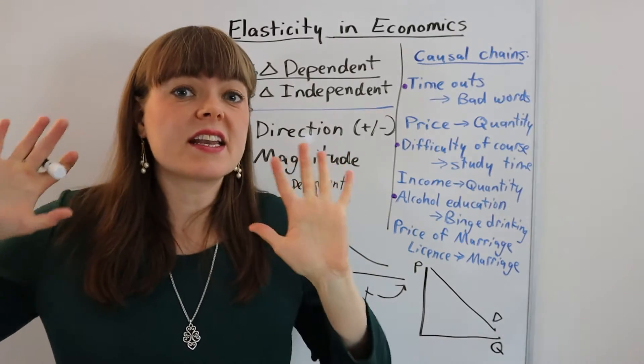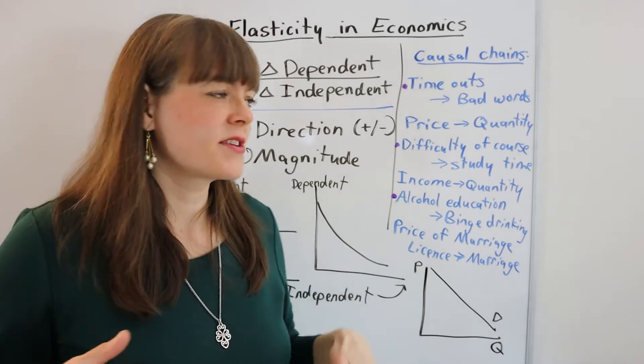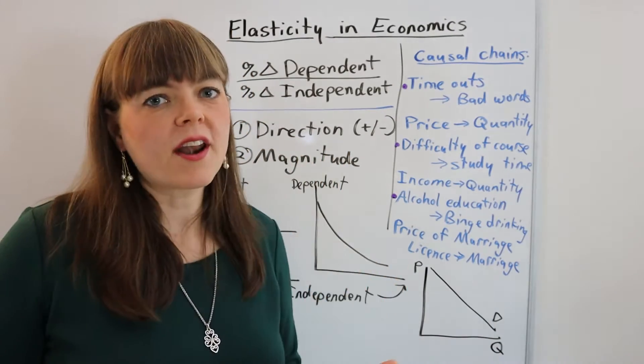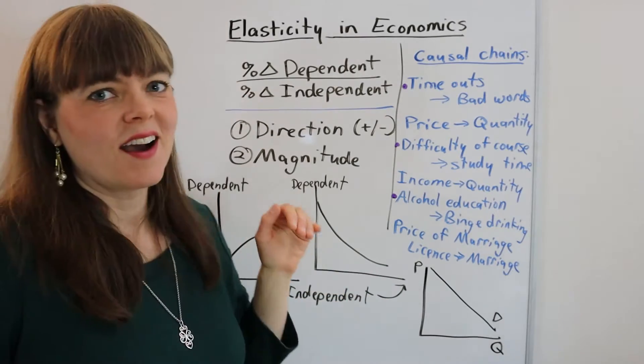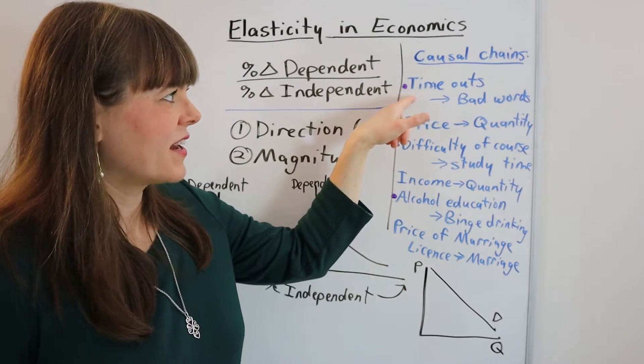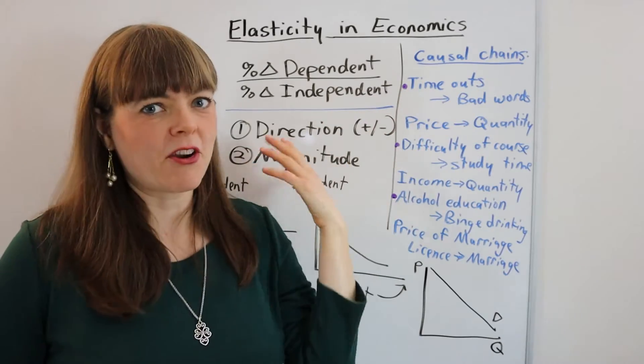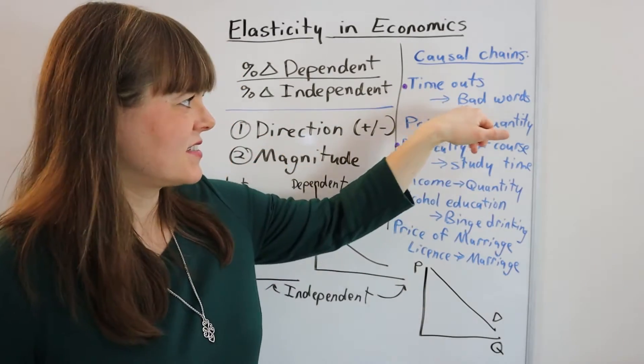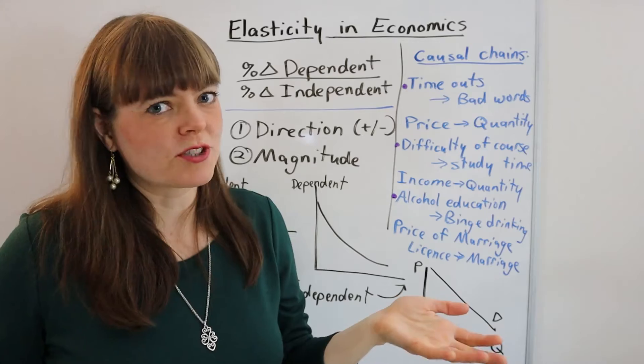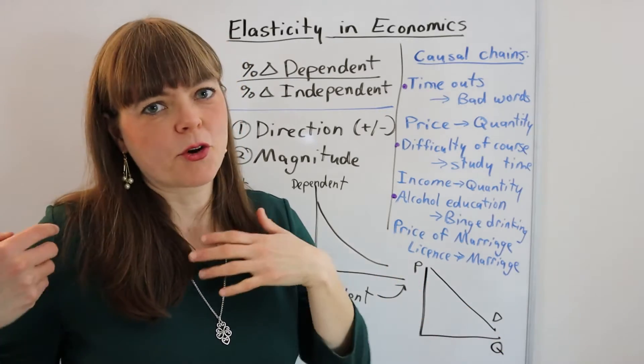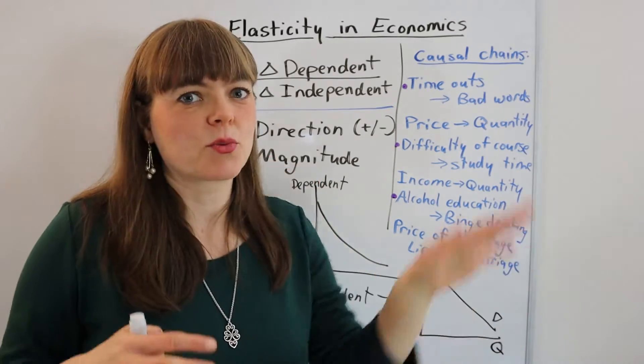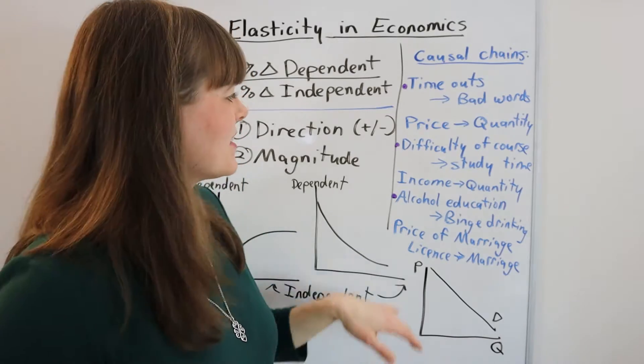I think it is easiest to learn this concept when you start with non-economics-y versions of these variables. So here I've got independent variable as timeouts that a parent gives their child, and dependent variable is bad words that the child says, because they're hoping that the timeouts will reduce the number of bad words.